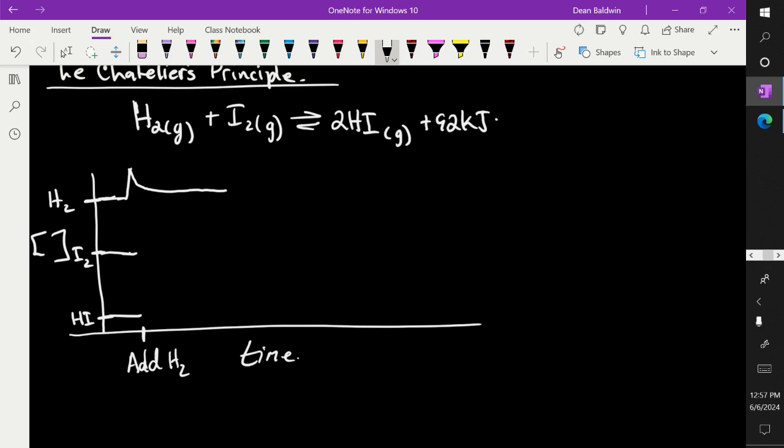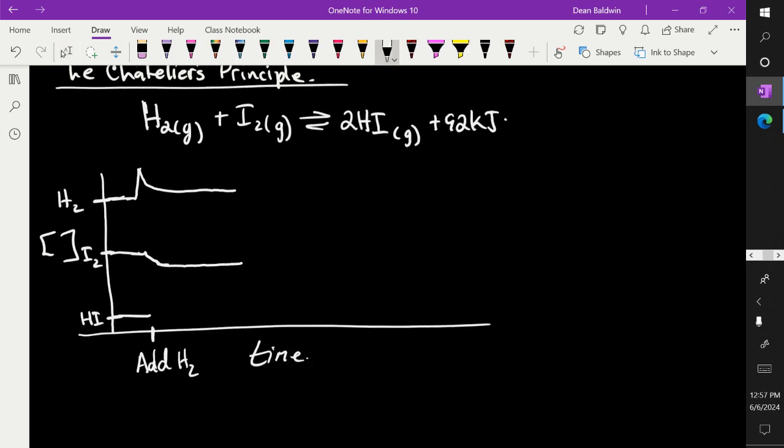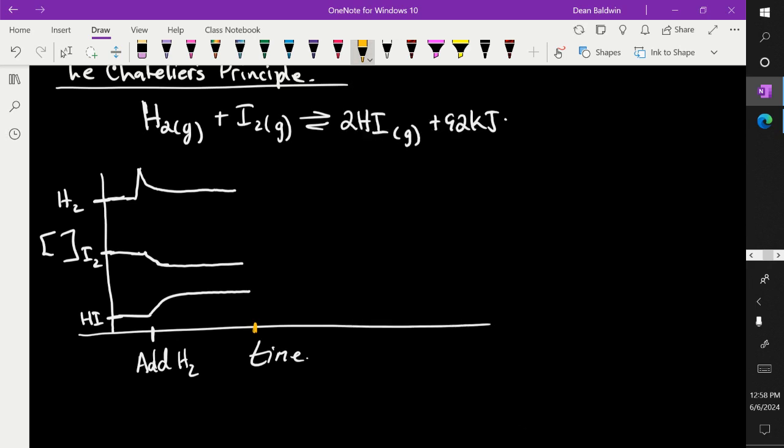What happens to I2? It decreases because the equilibrium shifts to the right. And HI increases. Then what are we going to do here?